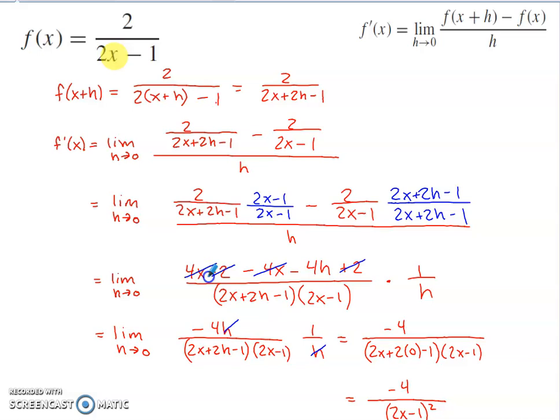Within that numerator, check out what happens. This 4x at the beginning is going to cancel with this minus 4x in the middle. This minus 2 toward the front is going to cancel with the plus 2 at the end. Those like terms combine to 0. So the numerator just ends up becoming negative 4h.